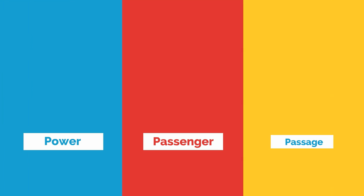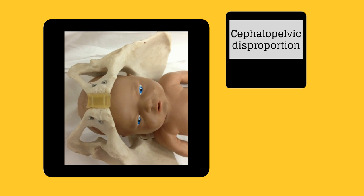The last of the three Ps to discuss is passage. Maternal skeletal or soft tissue issues can obstruct the birth canal. Cephalopelvic disproportion refers to the conflict between the fetal head and the pelvic size. The pelvic bone shape or maternal soft tissue, most commonly excess adipose tissue, can contribute to labor dystocia.